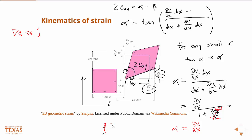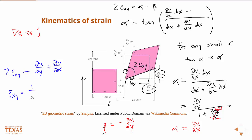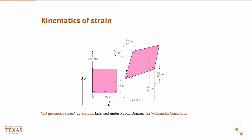Likewise, beta is equal to minus ∂u/∂y — it's the same geometry. And so finally, 2σxy is equal to ∂u/∂y + ∂v/∂x. The factor of 2 will make more sense in just a moment.